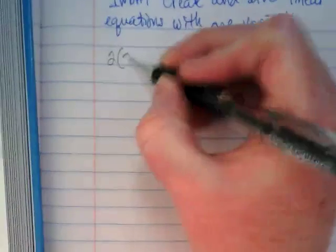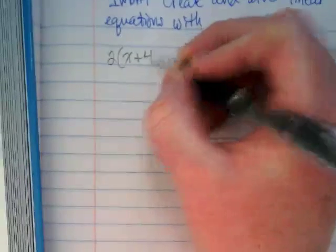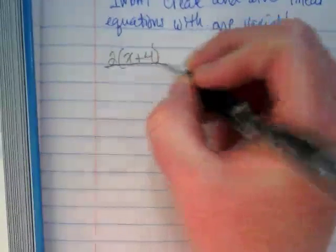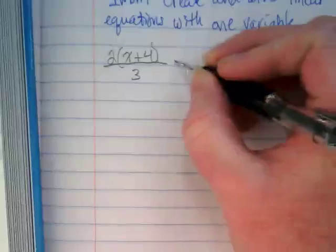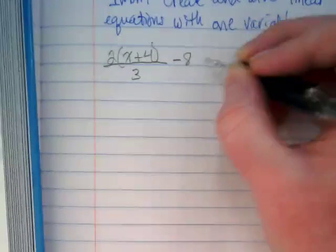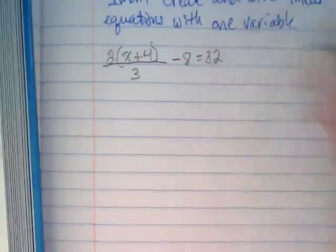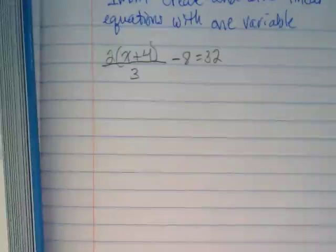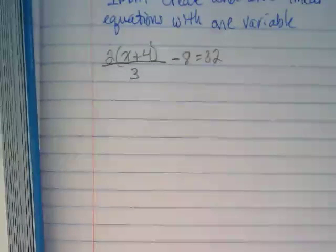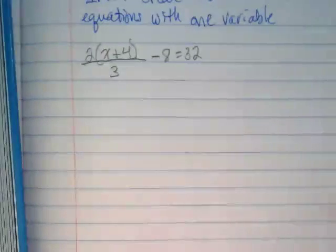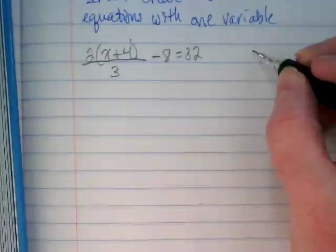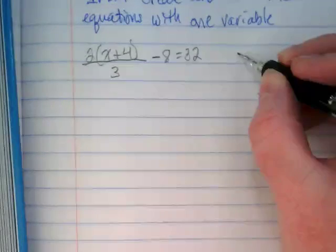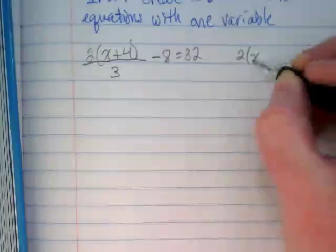2 times x plus 4 in parentheses, divided by 3, minus 8 equals 32. And I want you to write the same exact equation over here as well because we're going to start it two different ways.